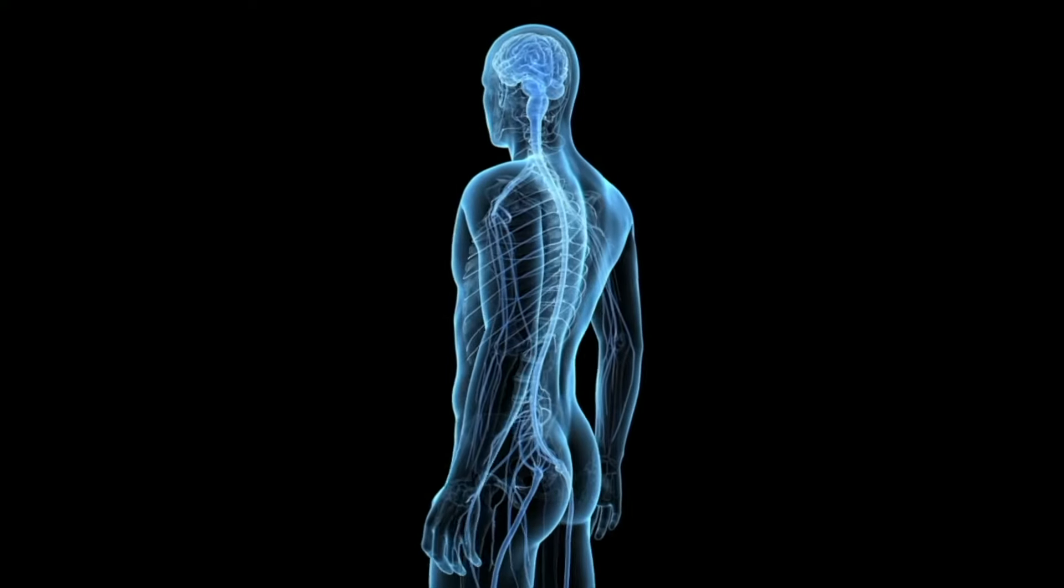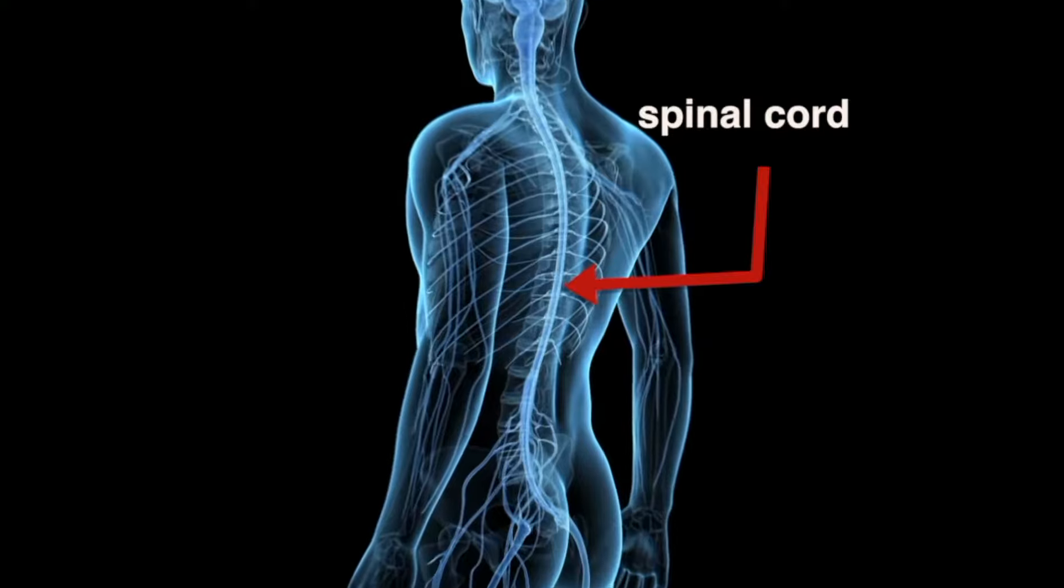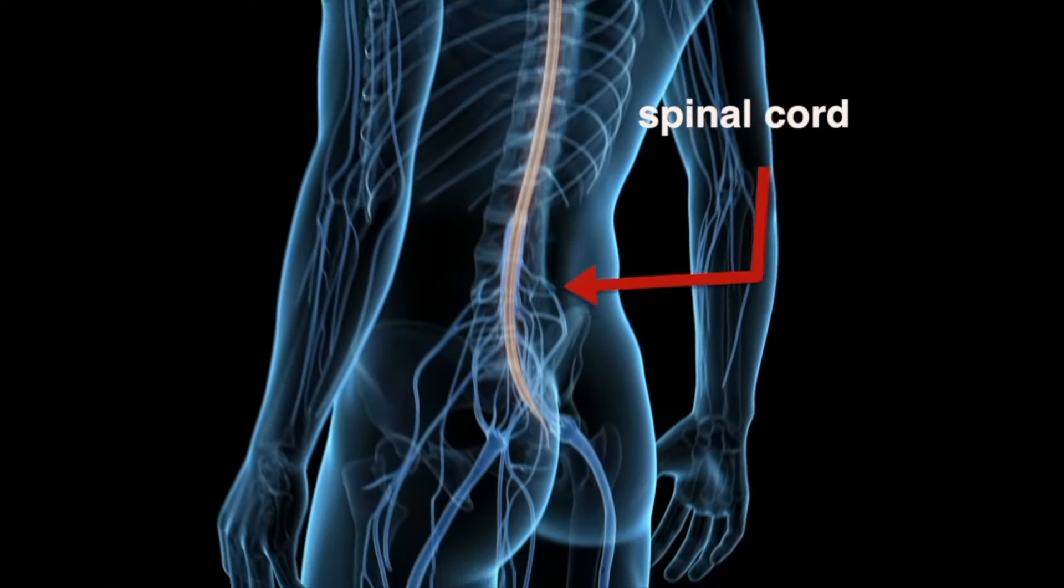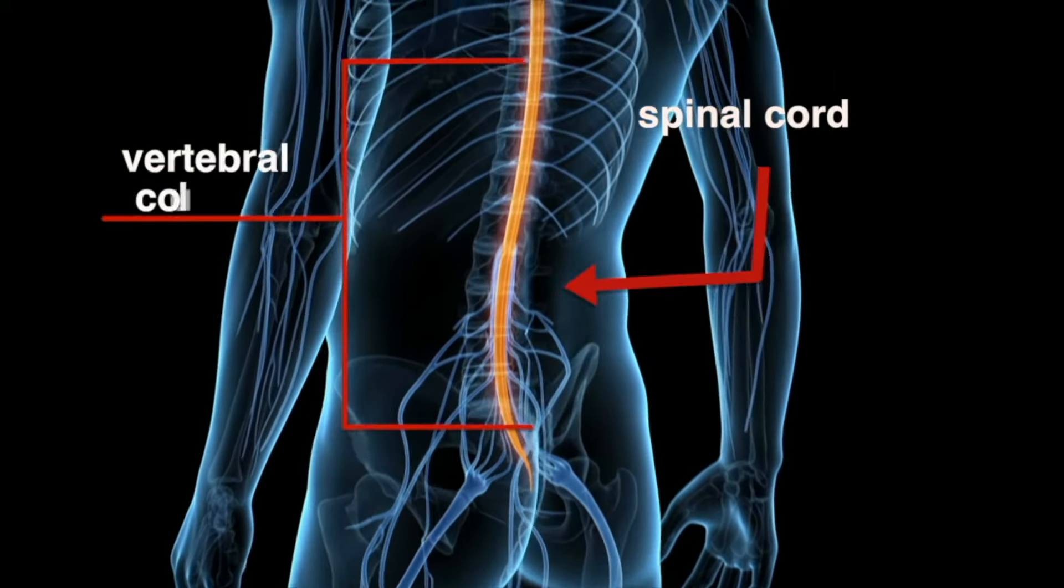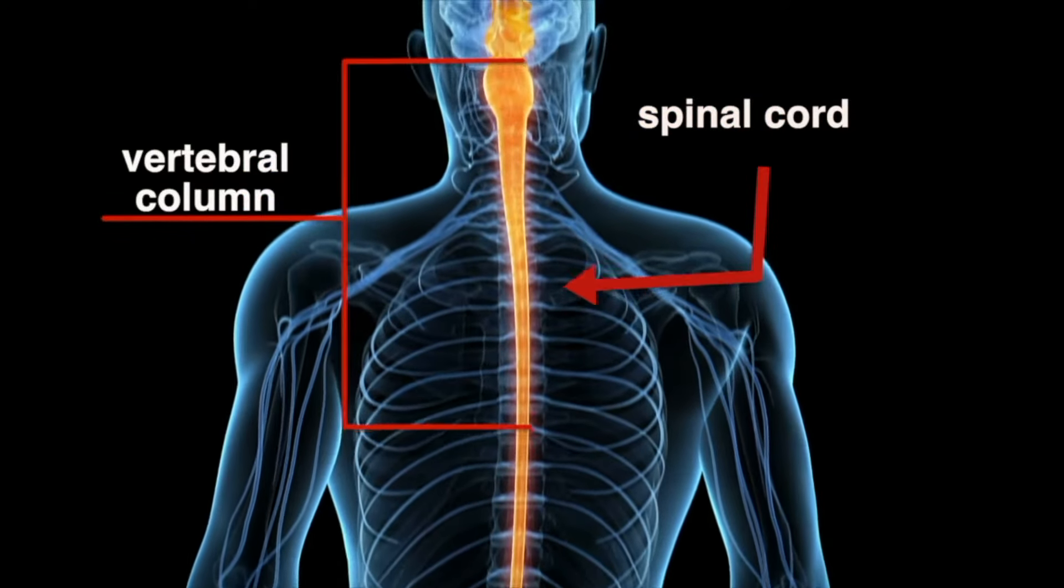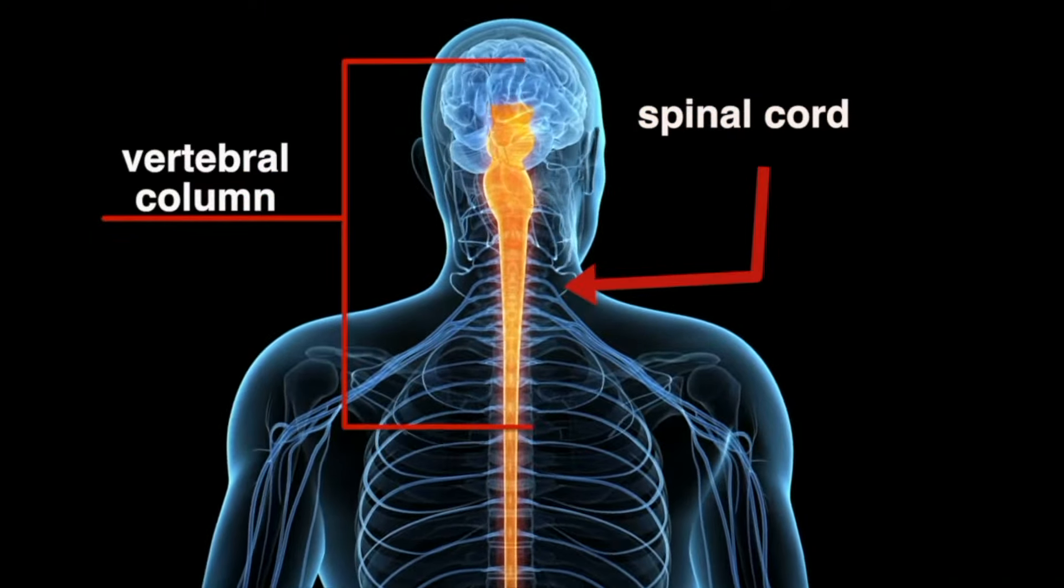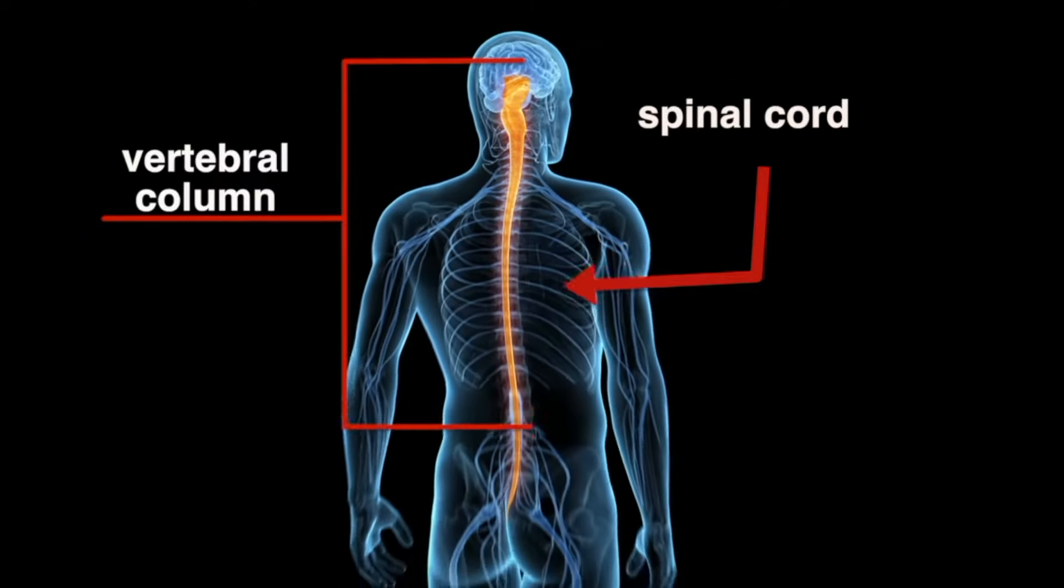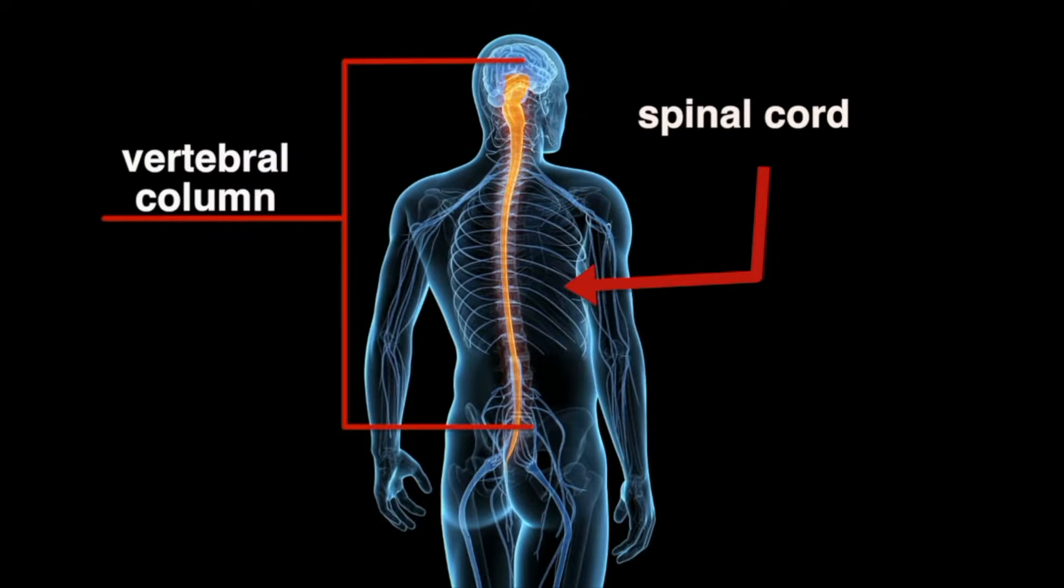The spinal cord runs down the center of your back and is surrounded by a protective bone structure called the vertebral column. The spinal cord is about as thick as your thumb and contains nerve fibers that pass impulses to and from the brain. It is the link between your brain and the peripheral nervous system.